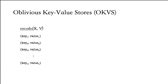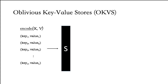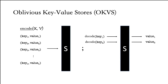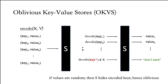Given a set of n key-value pairs, we can encode them into an object S. Later, we can use this data structure S to retrieve our key-value pairs. If we probe the decode function on any of the special keys, it returns the correct associated value. If we probe S on keys outside the set, we learn some value that we don't care about. When the associated values are random, you cannot distinguish if you probe S on an encoded key or some other key outside the set. This makes the key-value store oblivious.